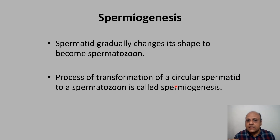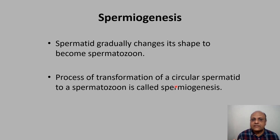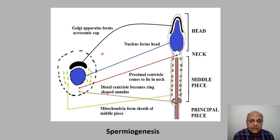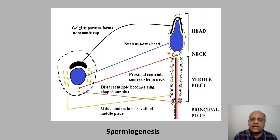If the exam question asks specifically about spermiogenesis (or spermateliosis), you only need to describe the transformation of the circular spermatid into a spermatozoon. In this process the Golgi apparatus forms the acrosomal cap, the nucleus forms the head, the proximal centriole lines the neck, the distal centriole becomes the ring-shaped annulus, and the mitochondria form the sheath of the middle piece. The resulting sperm has a head, neck with proximal centriole, middle piece with mitochondria, and a principal piece (tail).